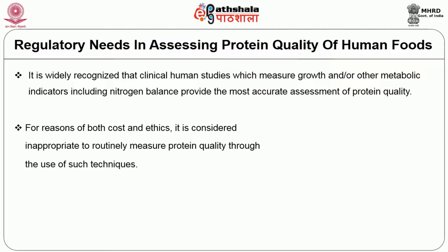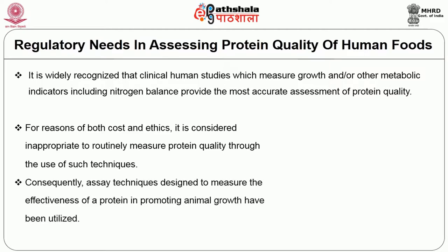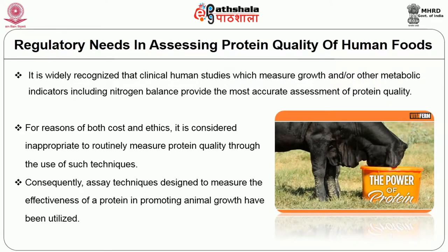Because when you use human volunteers for these studies, ethical considerations must be kept in mind. Consequently, techniques designed to measure the effectiveness of a protein in promoting animal growth have been utilized. Even animal ethical committees are now in place — whenever you conduct any growth study, protein efficiency study, nitrogen balance study, or PDCAAS evaluation in a laboratory animal, animal ethical committee clearance is mandated, just as human ethical committee clearances are required.